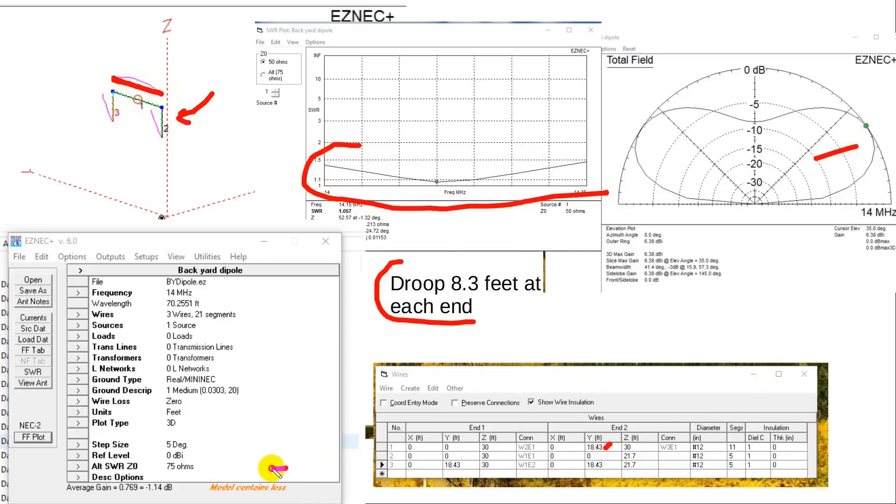Now there is some loss. Model contains loss, 1.14 dB. So the shorter you make this and the more you droop the ends, then you're going to lose something. I mean, this is a compromise antenna. And you lose a little bit. 1.14 dB at HF is not very much. So this is a perfectly viable option. It is a compromise antenna, but not terribly by much.